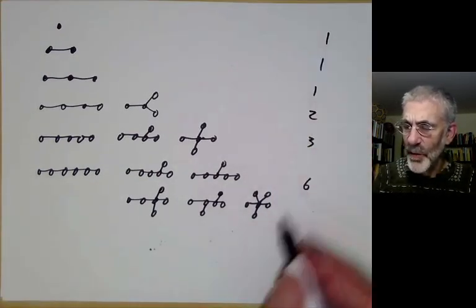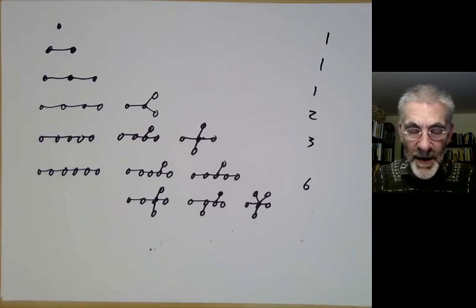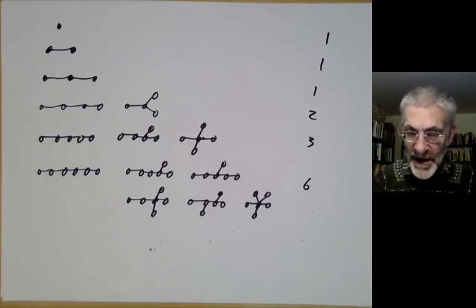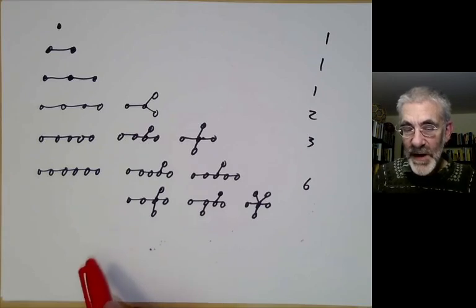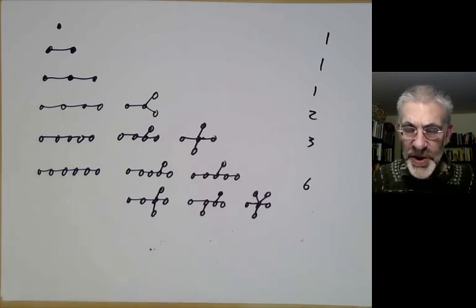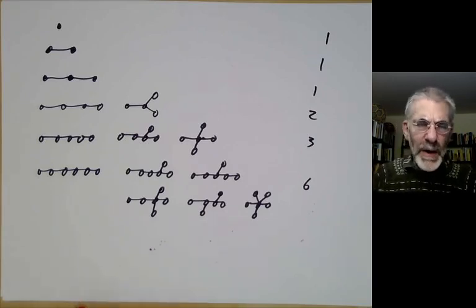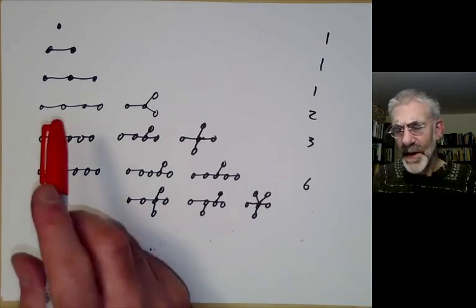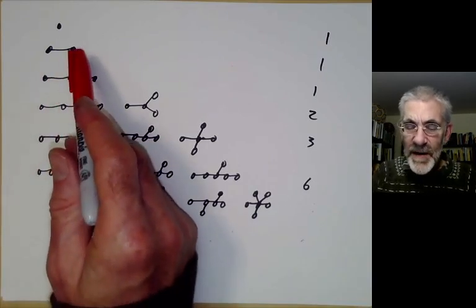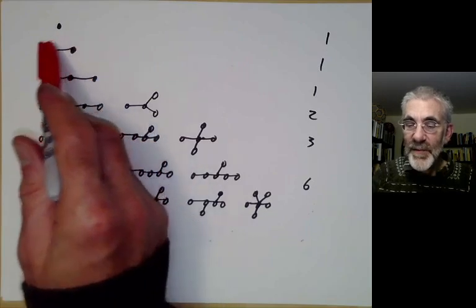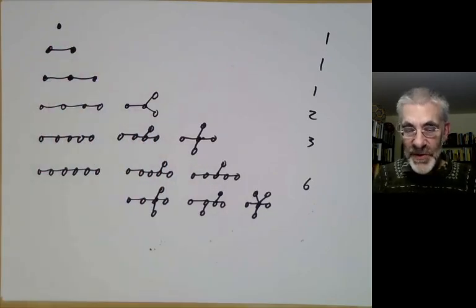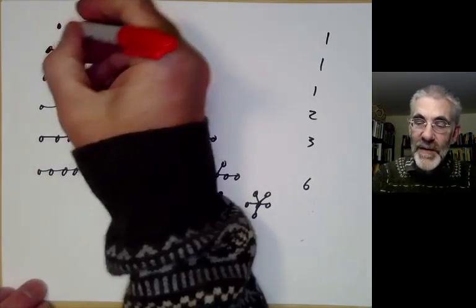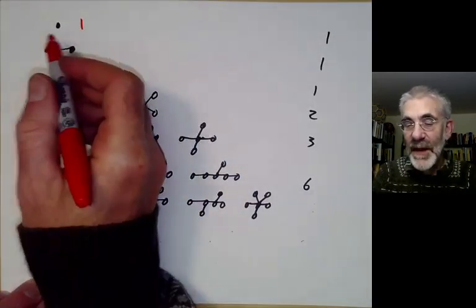So counting the number of trees, we're getting 1, 1, 1, 2, 3, 6. There doesn't seem to be any obvious pattern. In fact, it's not terribly easy to count trees, and I don't know of any easy formula for them. The best thing to do is to cheat. When counting things, it's easier to weight them by 1 over the number of symmetries.